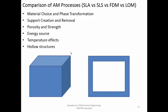The next parameter is temperature effects. SLA does not involve high temperatures during its process — it only hardens the polymer — so there is no risk of warpage or thermally induced stresses in the workpiece. In SLS, the laser melts and fuses particles, creating temperature gradients in the workpiece, which may lead to residual stresses and adverse microstructures. There are significant temperature effects in SLS.